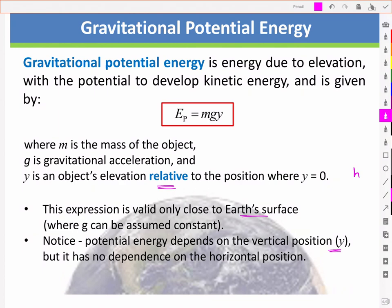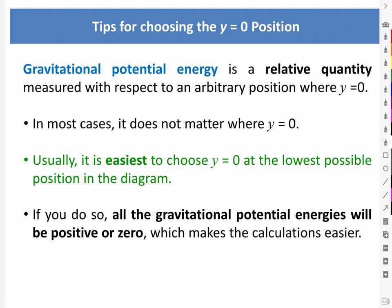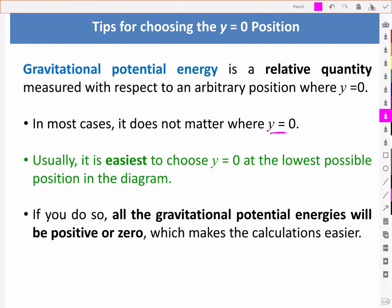Here are a few tips for choosing that arbitrary y equal to zero position. It's a relative quantity, measured with respect to an arbitrary position, and in most cases it does not matter where we choose y equal to zero. However, it's easiest to choose y equal to zero at the lowest position in the diagram or problem. If you do so, all the gravitational potential energies will be positive or zero, which makes the calculations a lot easier.